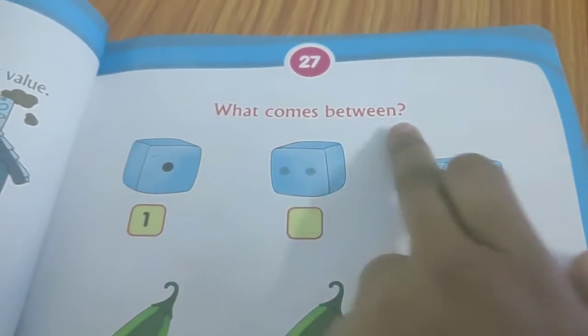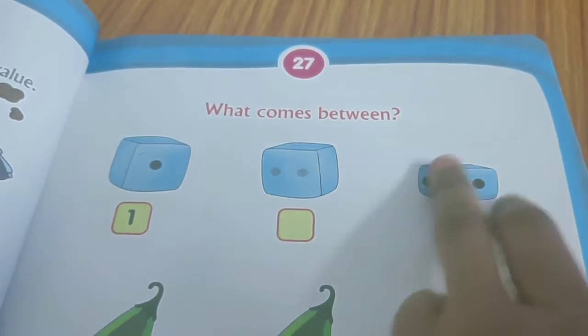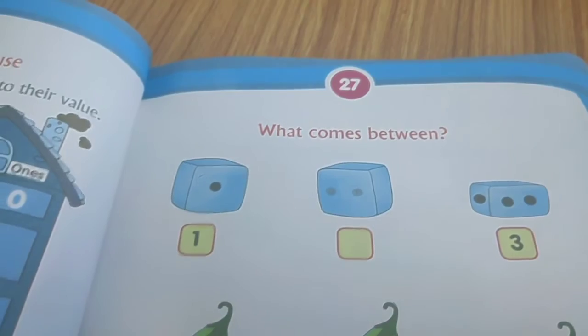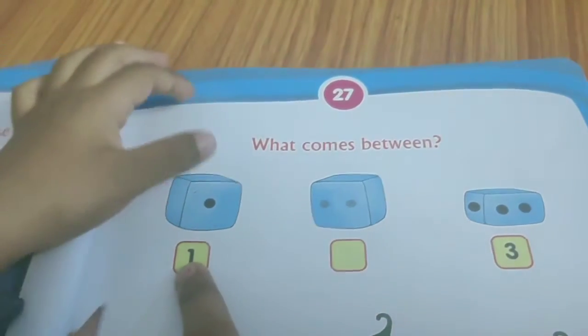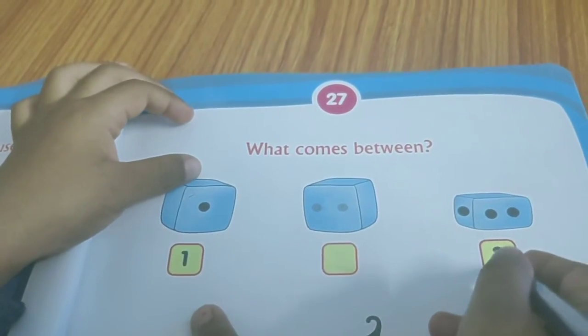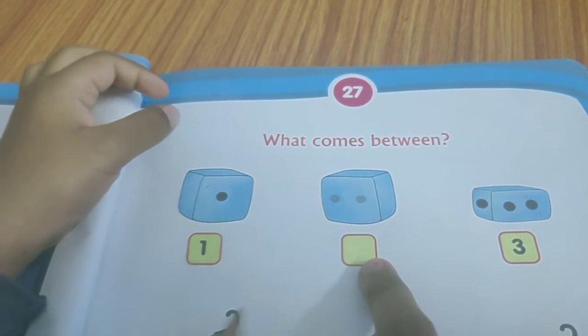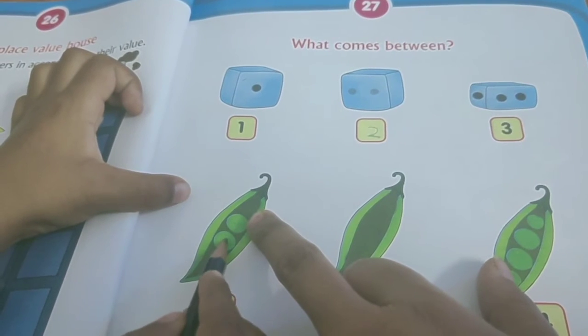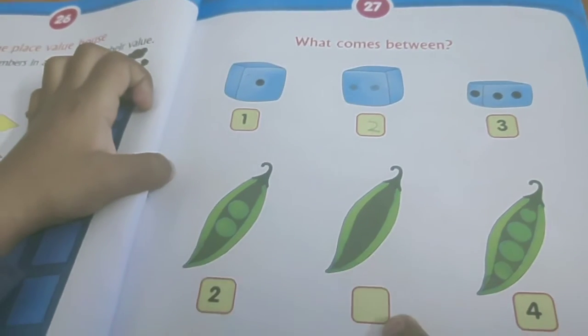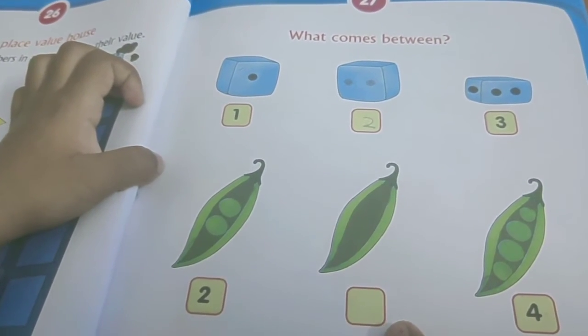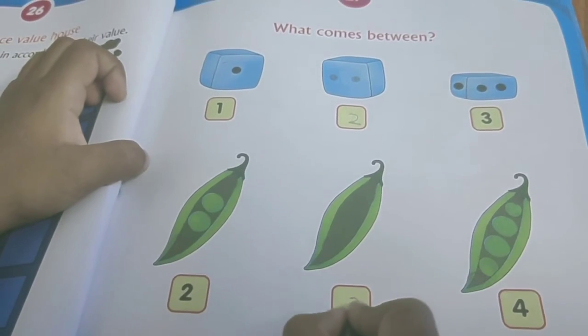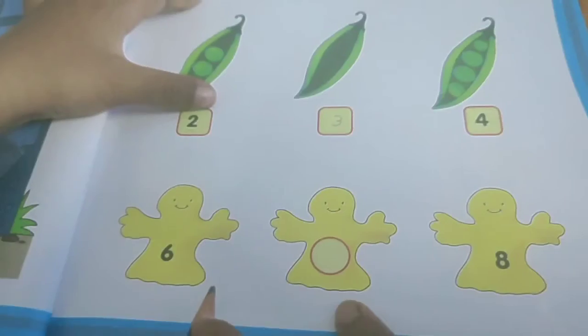What comes between? Okay. What comes between? Okay. One, two, three, four, yes. Two, four, yes. Two, three, four, yes.